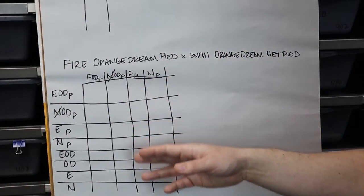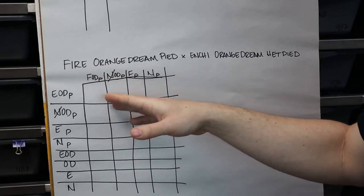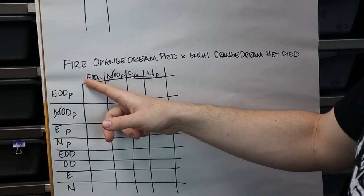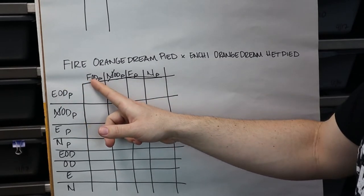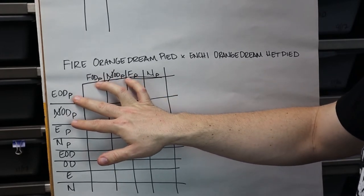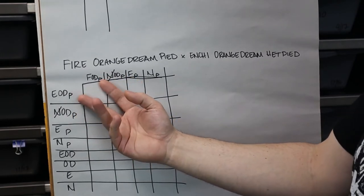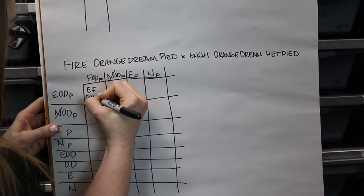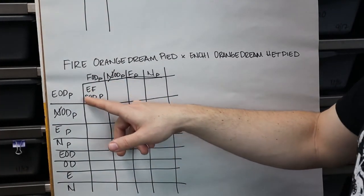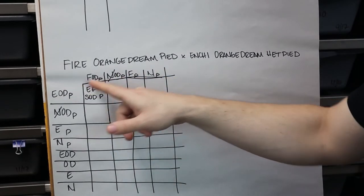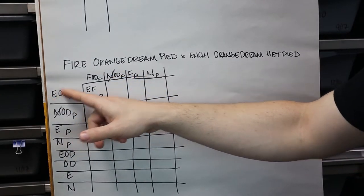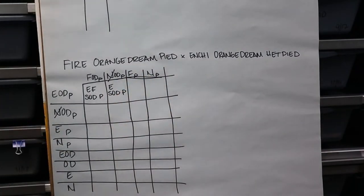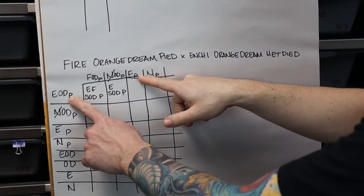Rather than writing all the letters in like before, we're going to look at the boxes and write in what they are as we go, because sometimes it makes more sense to look at what you got. For example, this first box: we have enchi and fire, orange dream twice — so that's a super orange dream — and two copies of the recessive gene, so that's a visual pied. That gives us an enchi fire super orange dream pied. Next box: orange dream and orange dream — super orange dream, enchi — so that's an enchi super orange dream pied.